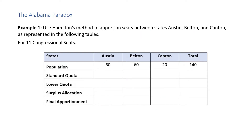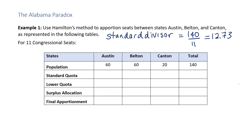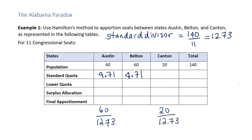Let's do the same problem but for 11 congressional seats. Then the standard divisor would be the total population, which is 140, divided by the number of items to be split up evenly — that's 11 congressional seats — and we'll round this to 12.73. In your calculator, solve the standard quotas. Start with Austin: 60 divided by 12.73, that's 4.71. We don't need to compute it again for Belton because it's the same population. Compute 20 divided by 12.73, and that quotient is 1.57.